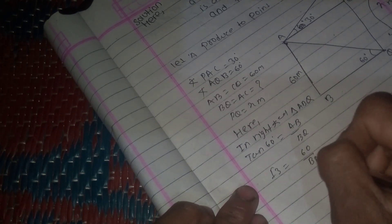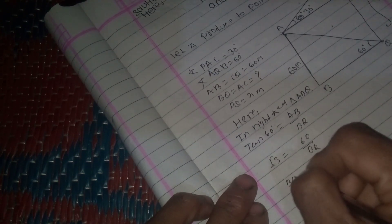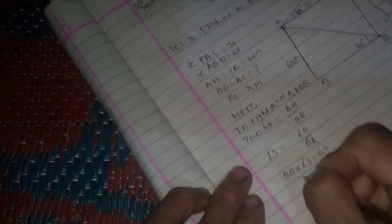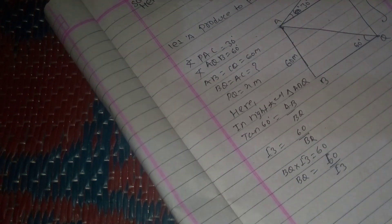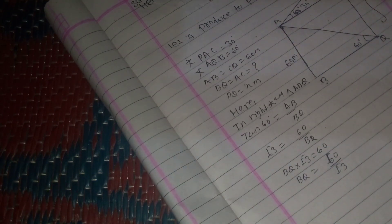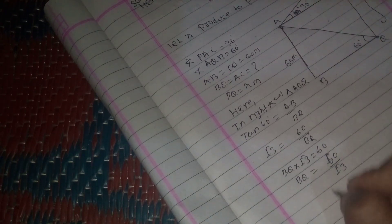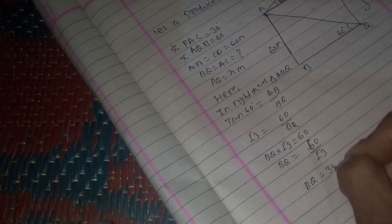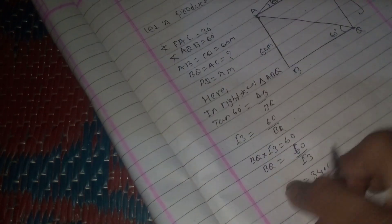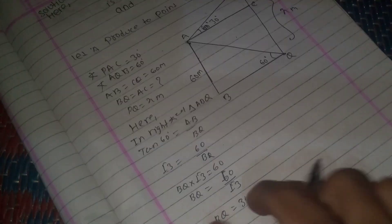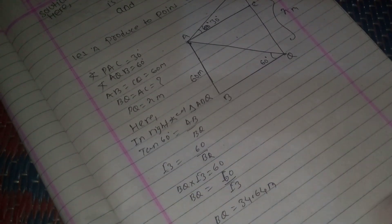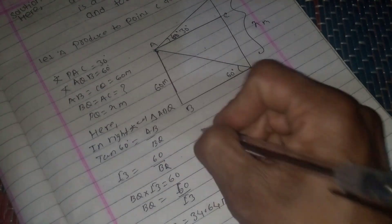Therefore BQ equals 60 divided by root 3. Multiplying and simplifying, BQ equals approximately 34.64 meters. So the distance between the tower and building is 34.64 meters.